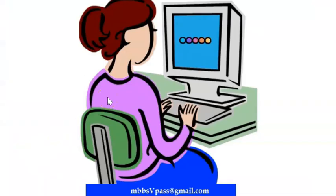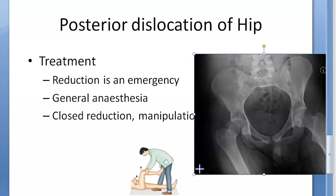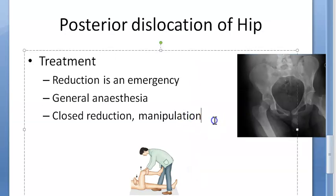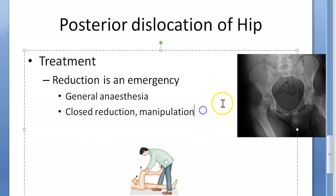The leg is kept in light traction with the hip abducted for three weeks. After that, hip mobilization exercises are initiated — this is essentially the rehabilitation phase. So after reduction: light traction with hip abducted for three weeks, then hip mobilization exercises.